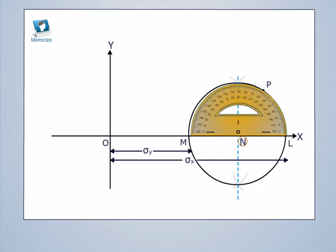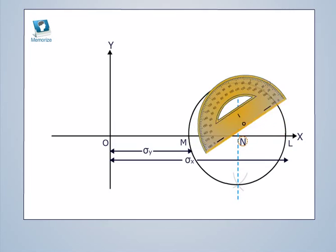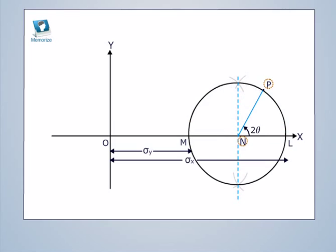From point n, draw a line np at an angle 2 theta. This line is drawn in the anti-clockwise direction. From p, drop a perpendicular pq on the axis ox. pq will represent tau, and oq will represent sigma n.